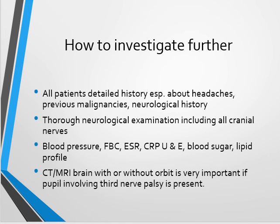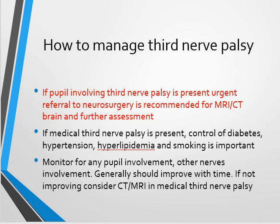If a pupil-involving third nerve palsy is diagnosed, get in touch with neurosurgery or the medical team immediately for further evaluation, as it can lead to sudden intracranial bleed and death if not managed acutely. If the pupil is normal, a vascular cause is likely and the patient can be monitored with good control of diabetes, blood pressure, and other risk factors. Even in medical third nerve palsy, if it is not improving over time, consider neuroimaging to rule out other causes.